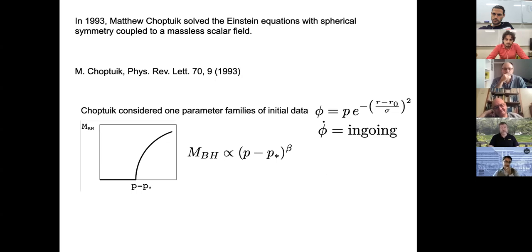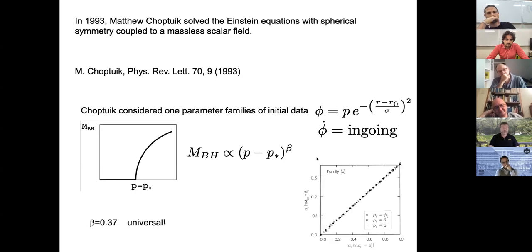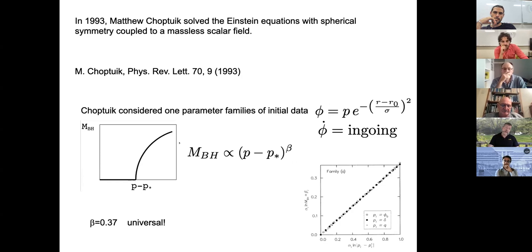What came as a big surprise was that this power law and exponent are universal: no matter what initial data you put in, you always get a law of this sort. The parameters vary, the constant of proportionality varies, but the exponent is universal. Whether you varied the amplitude, the width, or the initial position of the Gaussian, you always got a law of this sort.